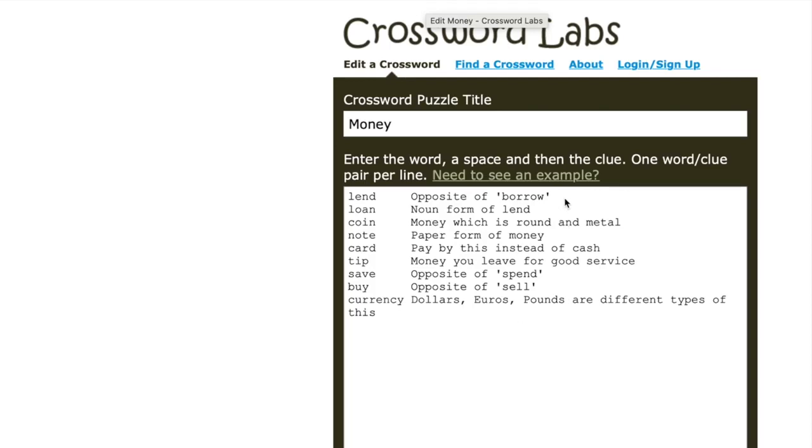When I write clues, I often use a mixture of either definitions or I focus on word forms, or I play around with it a bit. So for 'lend' I've got 'the opposite of borrow,' for 'loan' the noun form of lend, then for 'coin' I've written 'money which is round and metal.'